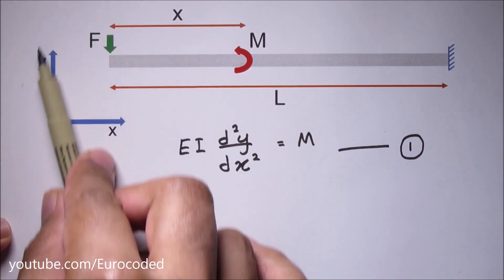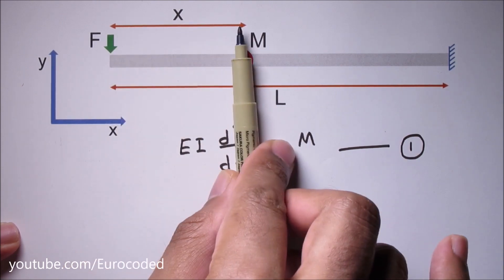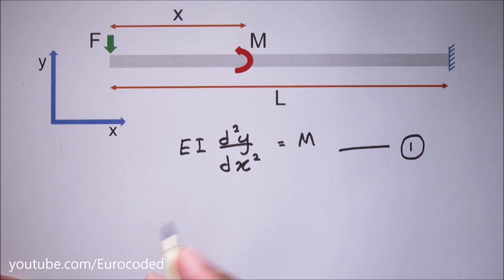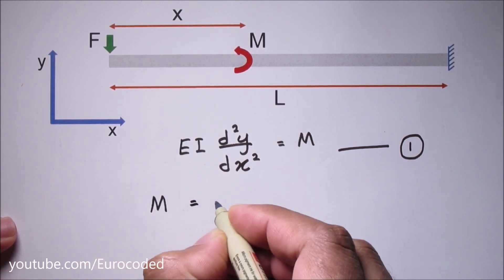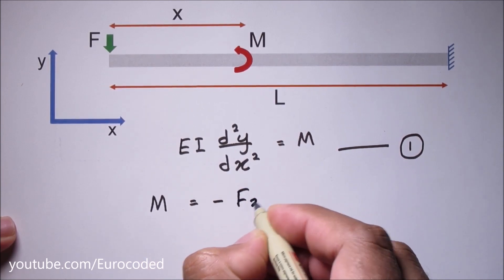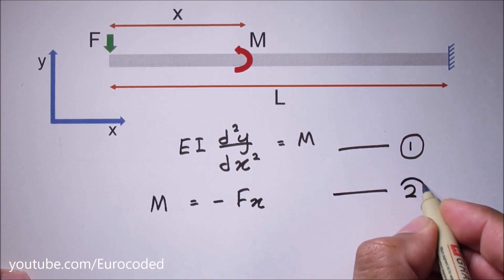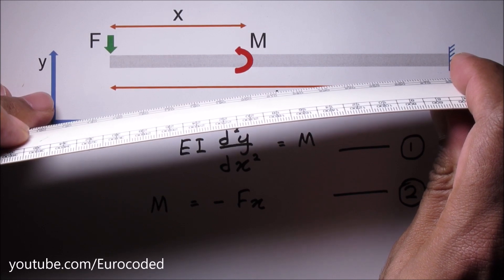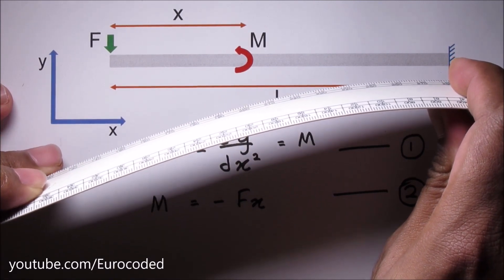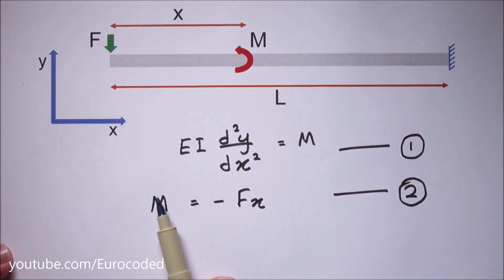If we take this as our xy plane, then the bending moment M for any given x value we can simply write that the bending moment M is equal to minus Fx — let's call this equation 2. A cantilever beam will be subjected to a hogging bending moment with a deflection something similar to this ruler. Therefore this bending moment is minus Fx.